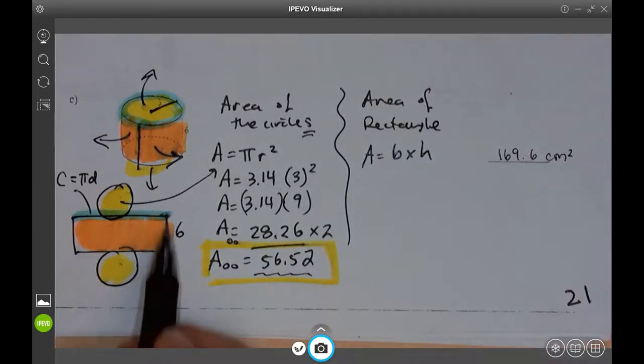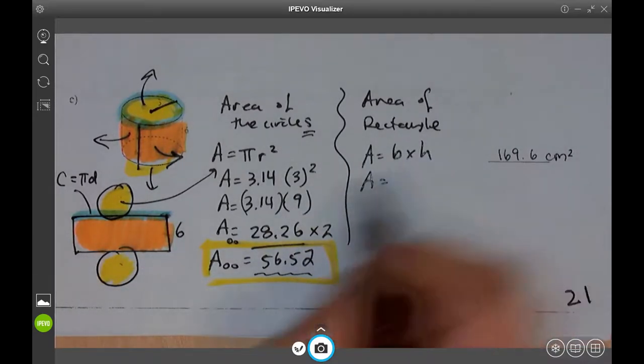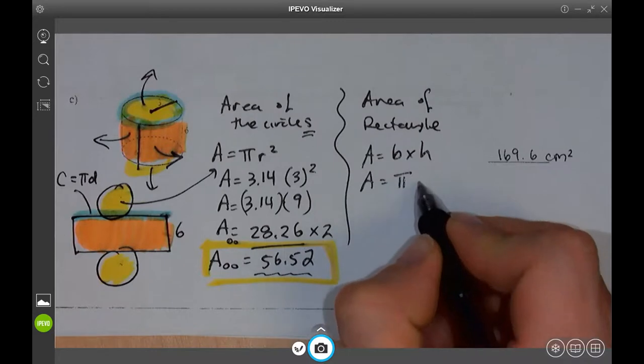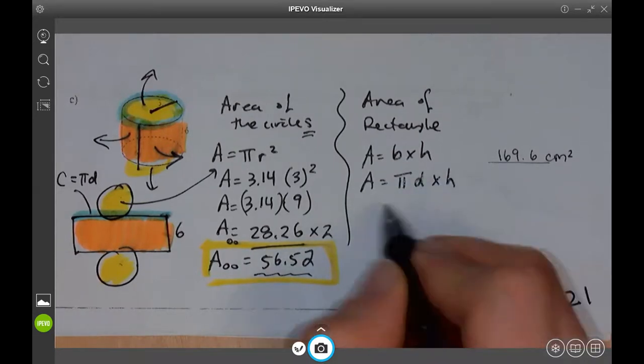What is my height? It's six. What is my base? Circumference. Pi d. So pi d times height. Okay.